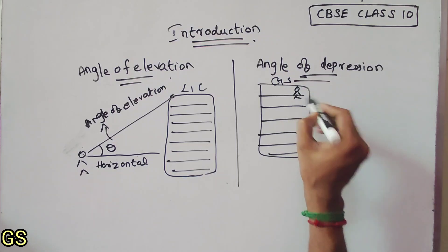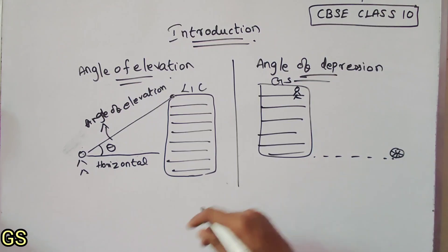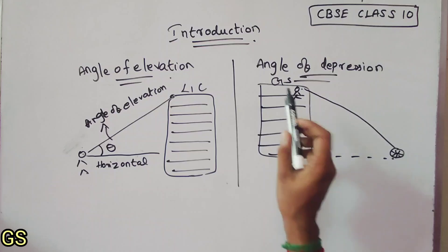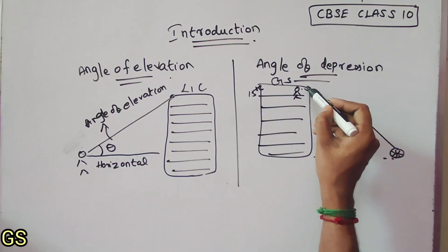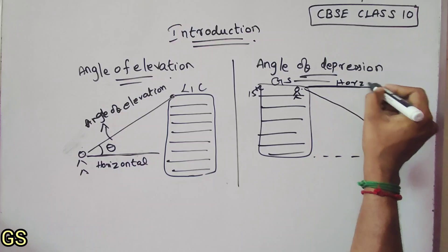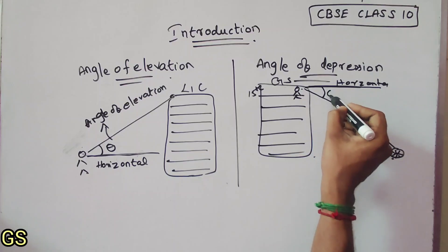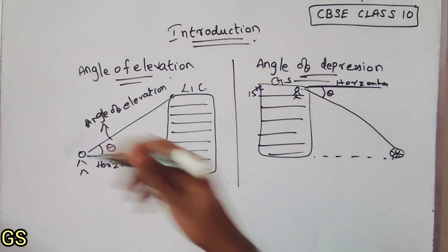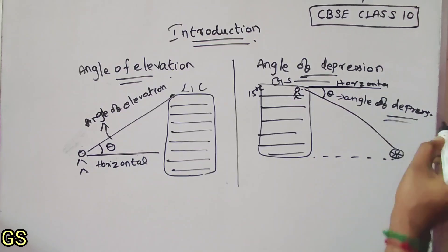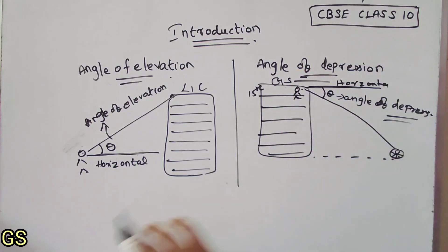Here we have a building above, and on the bottom there is a reference point. This is the horizontal level. The angle formed when looking downward from the top of the building below the horizontal level is the angle of depression.